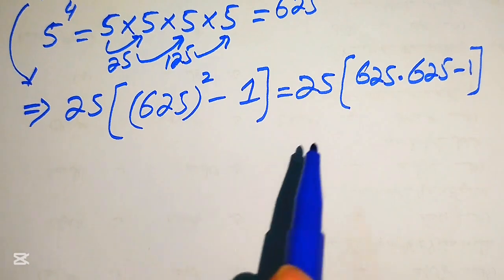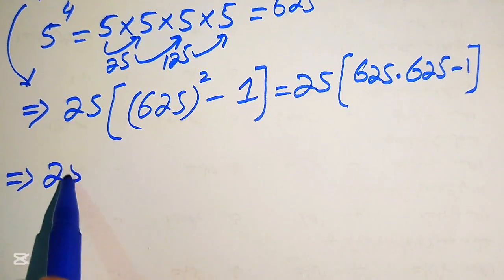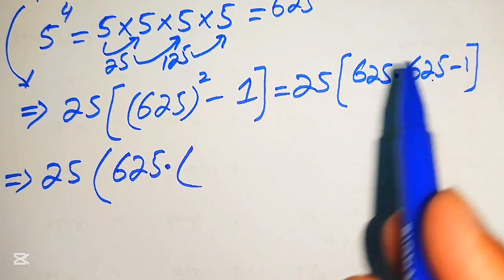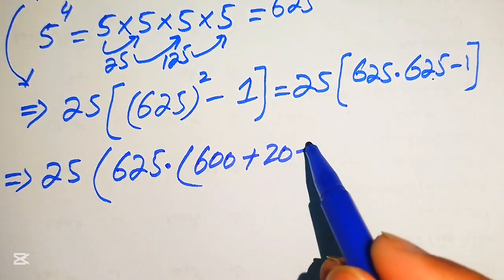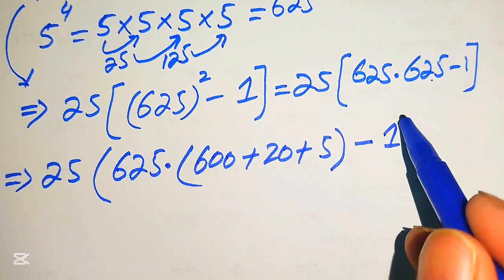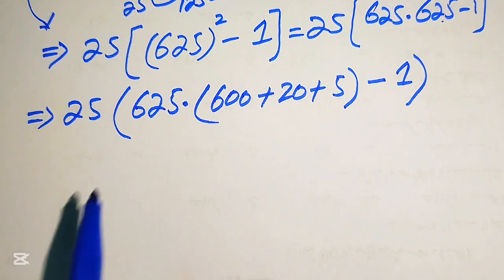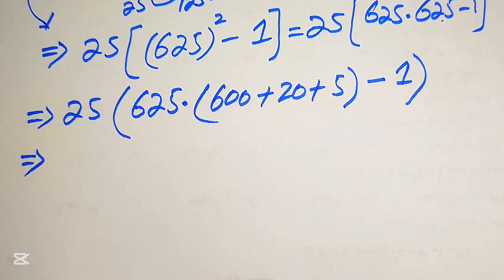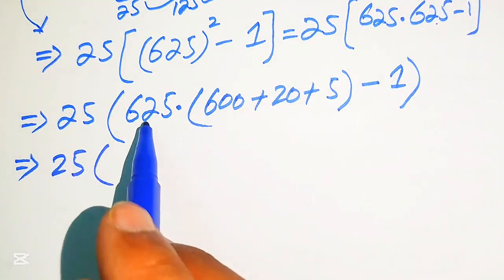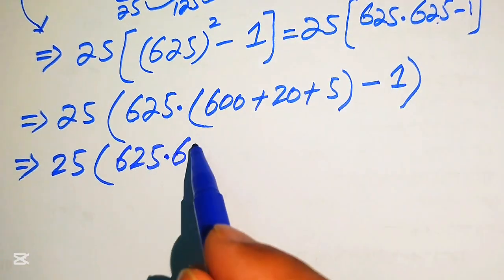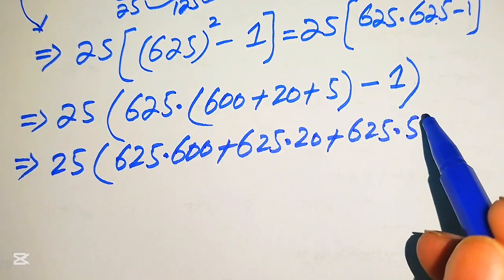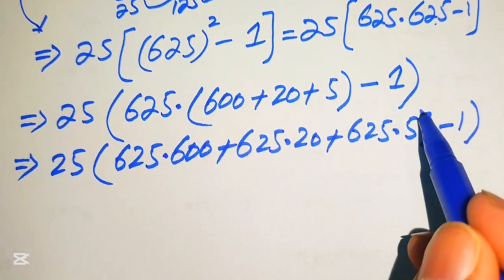We rewrite 625 as 600 plus 20 plus 5, so the bracket becomes 625 multiplied by 600, plus 625 multiplied by 20, plus 625 multiplied by 5, minus 1. I'll give you a nice trick to do all these multiplications in your mind without needing a calculator.